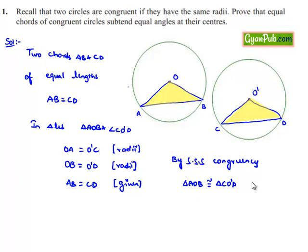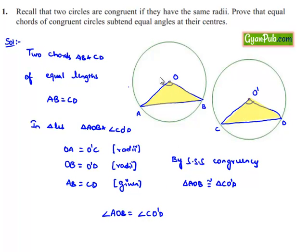When two triangles are congruent, their corresponding angles are equal. Therefore, angle AOB is equal to angle CO'D. Therefore, equal chords of congruent circles subtend equal angles at their centers. Hence proved.